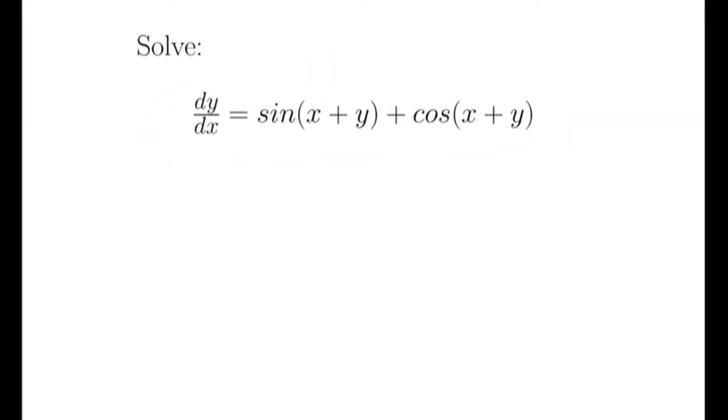Note that this differential equation suggests we must make a substitution x plus y equals u. So we let x plus y equal u. By taking the derivative of both sides, we get 1 plus dy/dx is equal to du/dx. So we have dy/dx is equal to du/dx minus 1.